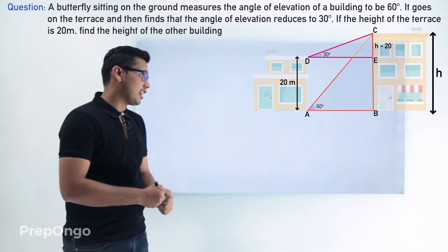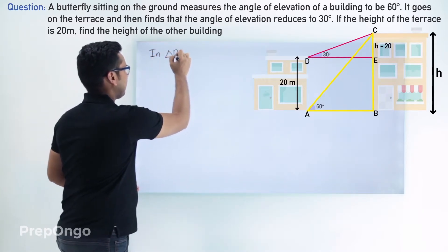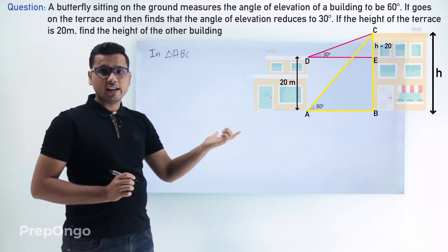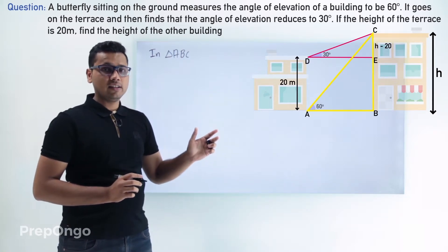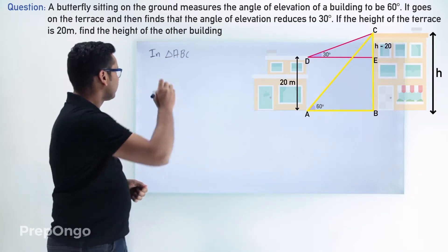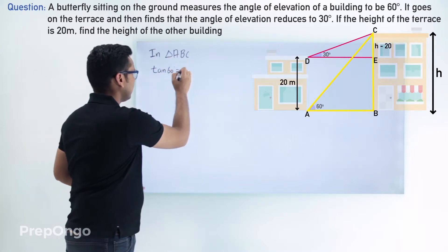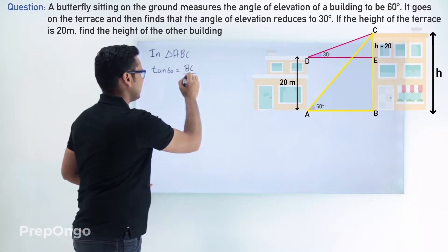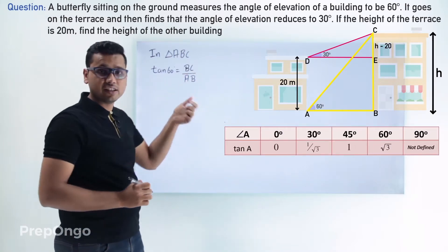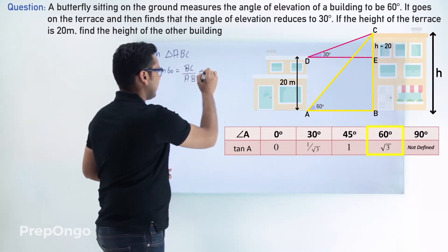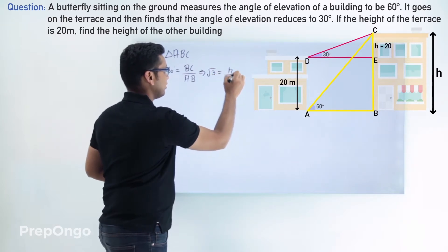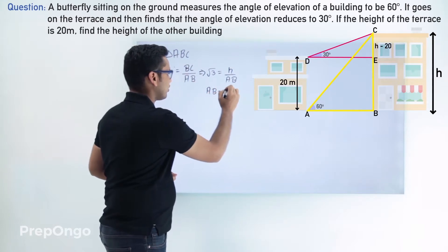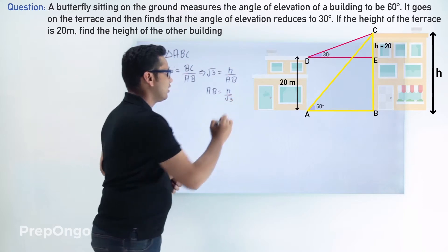Let's apply trigonometric ratios in triangle ABC first. We are given that the opposite length is H and we have to find the adjacent side. So we apply TOA — tan is opposite upon adjacent. Tan of 60 degrees equals BC upon AB, which gives root 3 equals H upon AB. Therefore AB equals H divided by root 3.